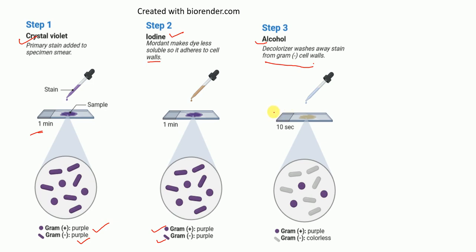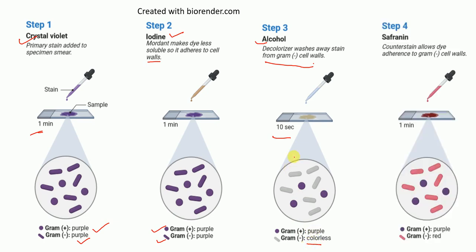Alcohol is added and allowed to stand for about 10 seconds. By the end of this step, gram positive bacteria appear purple whereas gram negative bacteria become colorless. In the final step, which is the safranin step, a counterstaining with safranin is done that allows adherence of safranin to the gram negative cell walls.